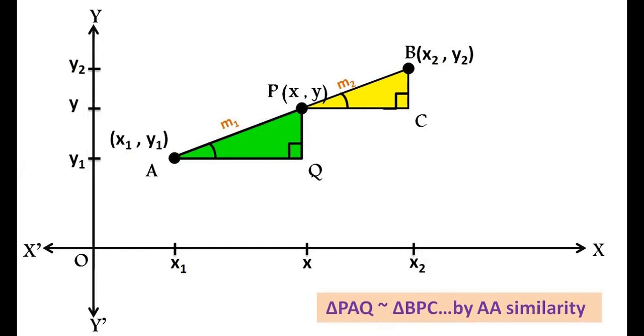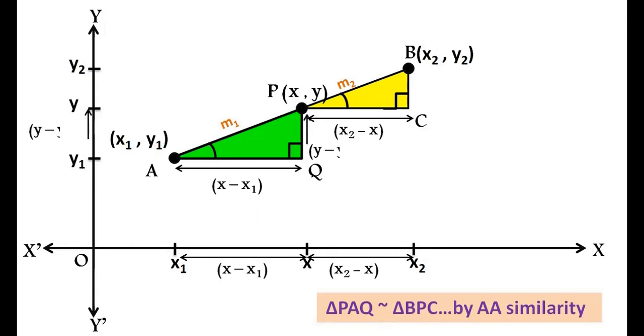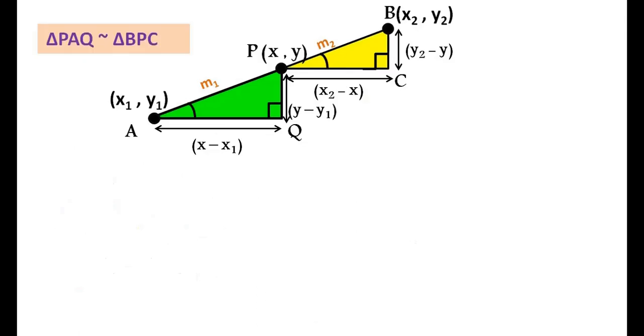Observe the figure. Distance AQ is x minus x₁, PC is x₂ minus x, PQ is y minus y₁, and BC is y₂ minus y. As we know, triangle PAQ is similar to triangle BPC.